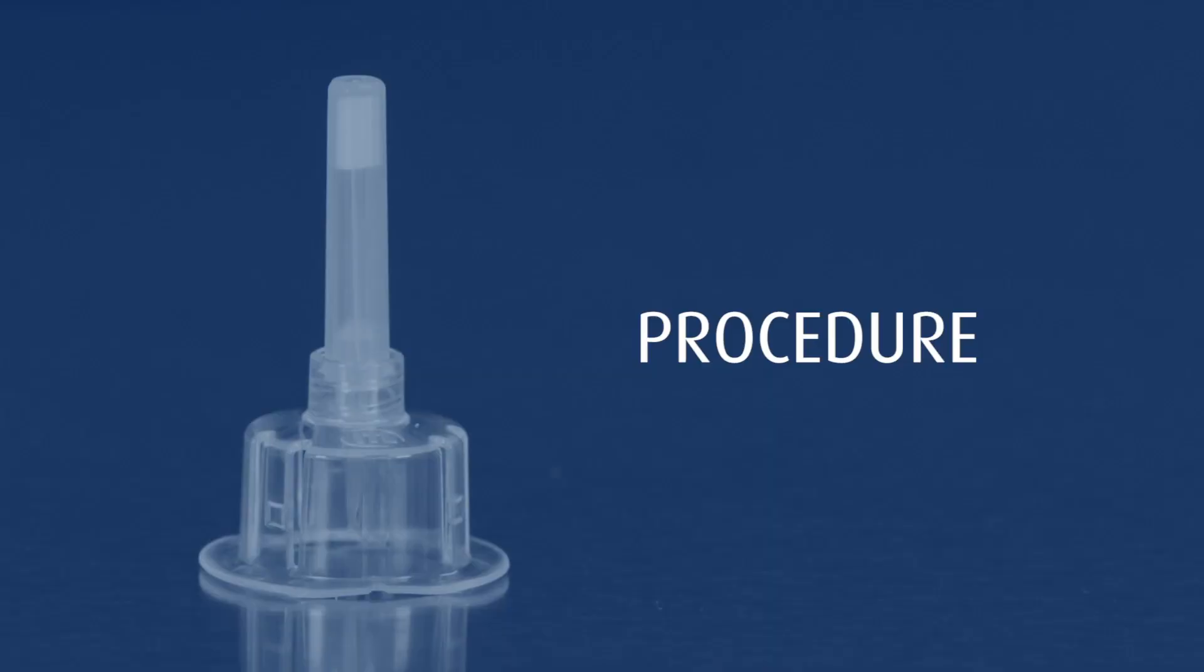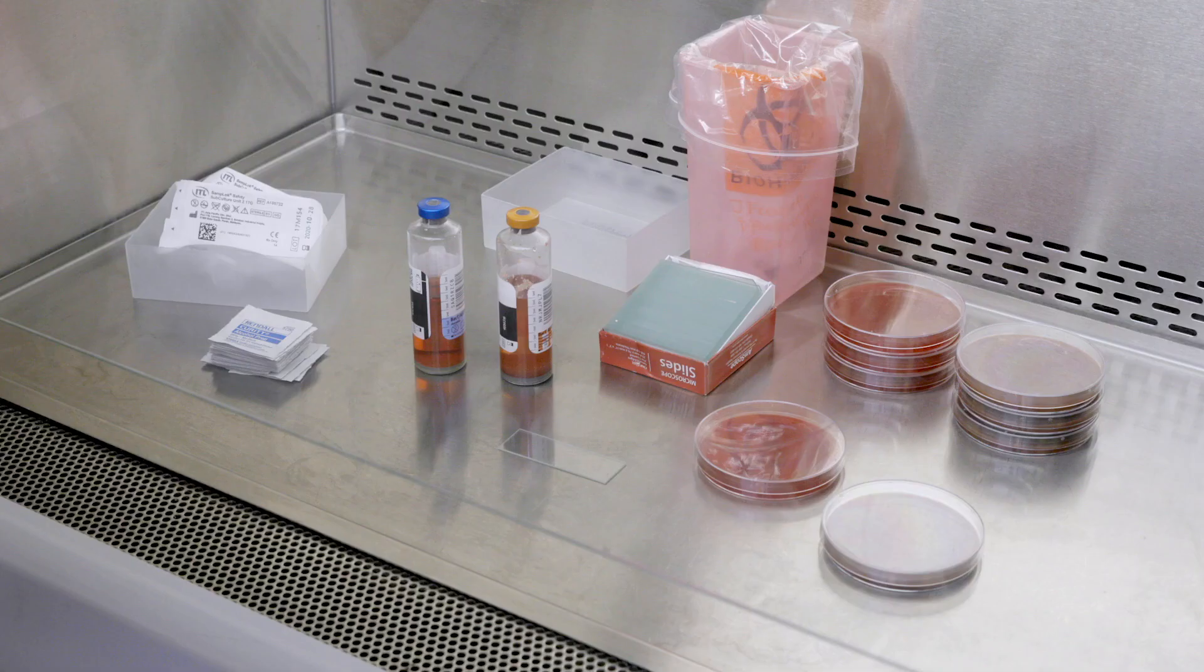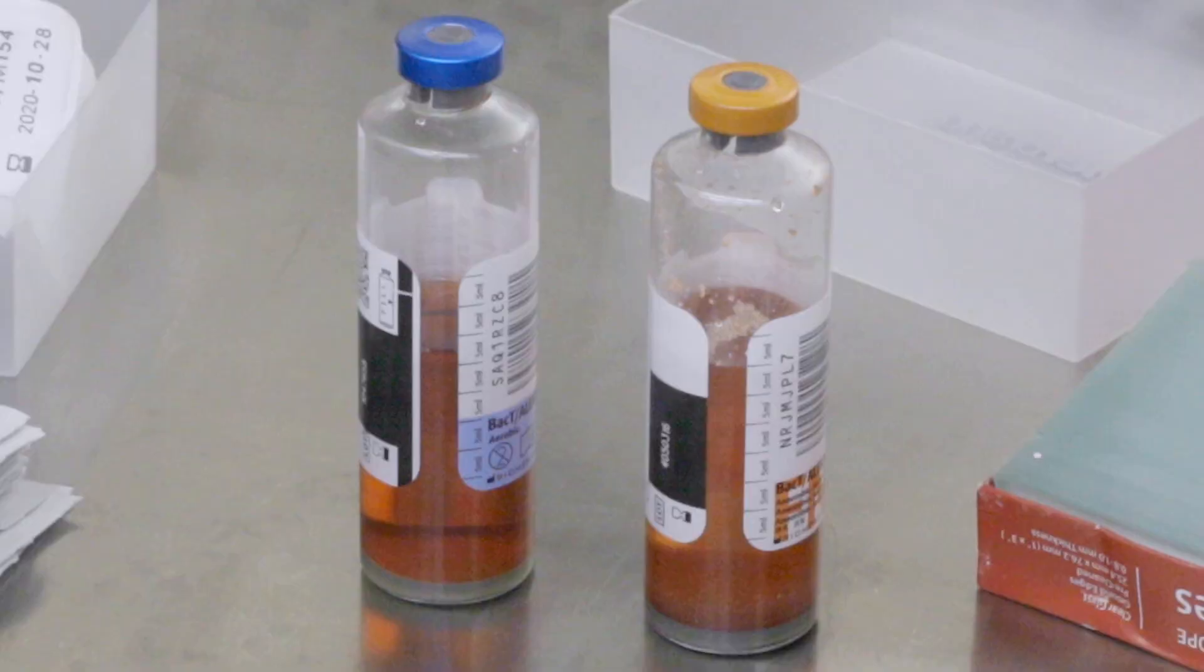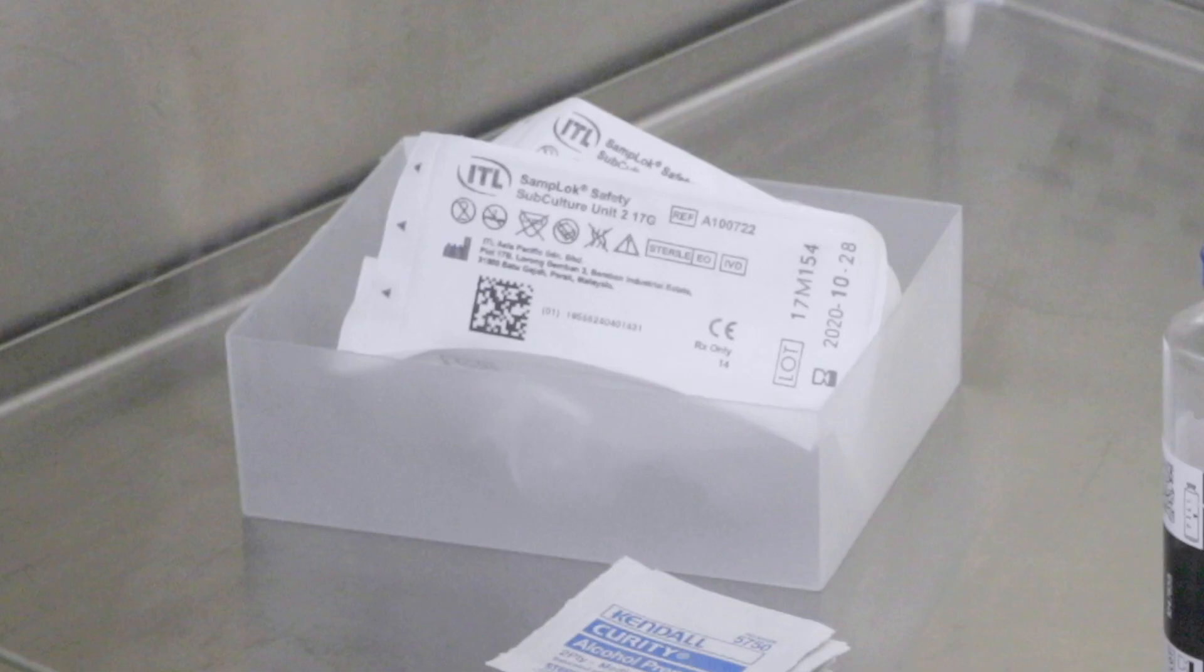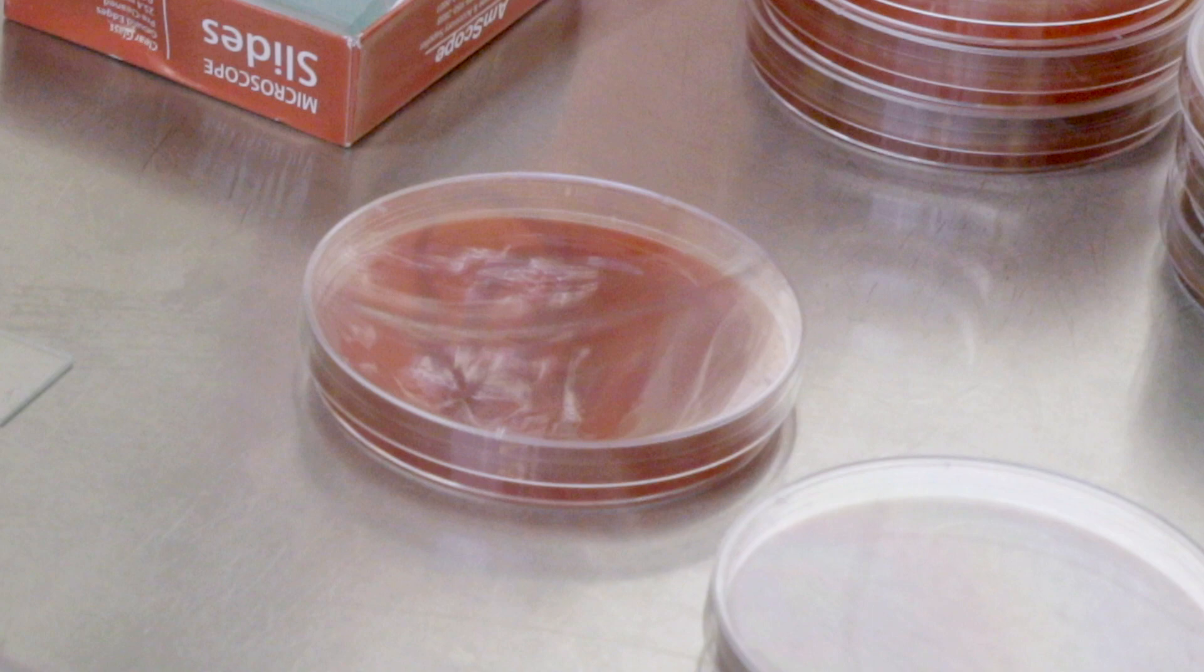Let's review the simple procedure for using Safety Subculture Unit 2. First, gather materials that will be used during this procedure, including blood culture bottles, alcohol pads, SCU-2, slides, and media plates.